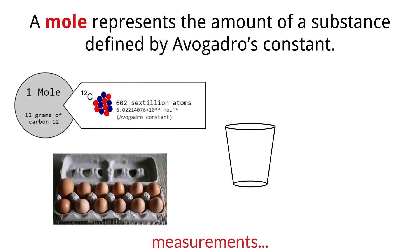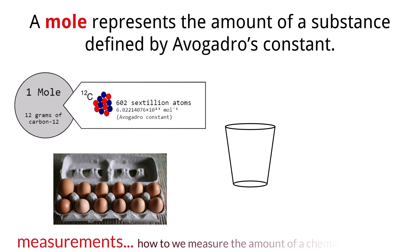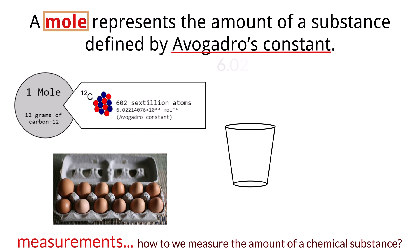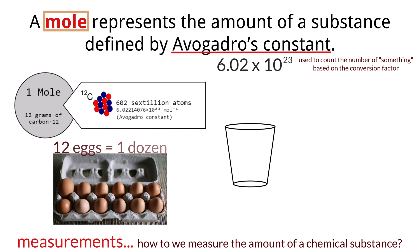Measurements are extremely important in science, and the way we measure the amount of a substance or chemical is with a very specific measurement value called a mole. A mole is a unit of measurement that is defined by Avogadro's number, which is 6.02 times 10 to the 23rd. You can think of this value as a constant used to count the number of something, in the same way that you would use 12 to count a value of one dozen.